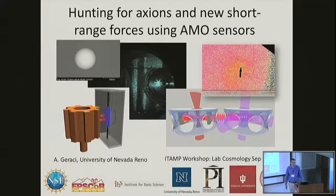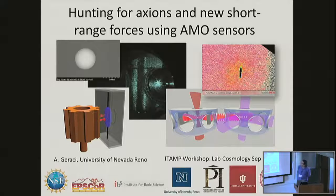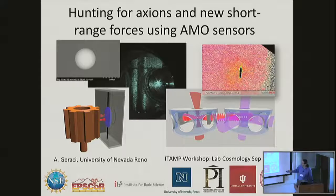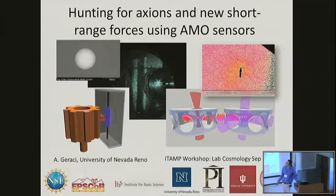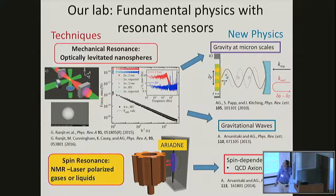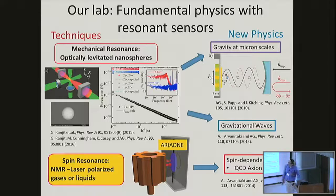Thank you to the organizers and ITAM for the opportunity to attend this workshop. It's been a lot of really great talks. I'm going to say a little bit about the work we're doing at University of Nevada on using AMO sensors to look for new physics, in particular axions and other new short-range forces that have cosmological implications, which ties in well with the overall scope of the workshop.